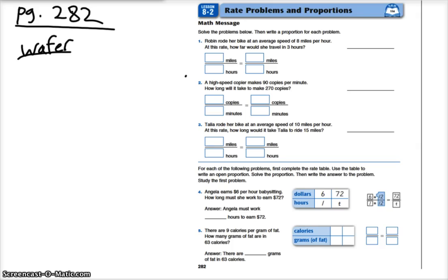Alright, we are continuing with our rate problems and proportions. What we are doing is we're pretty much making two equal fractions. And when you set them equal to each other, they're called a rate problem, a rate. So we have miles per hour for our number one.